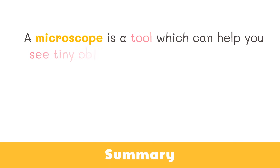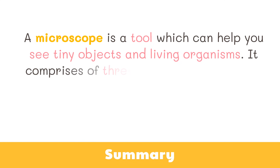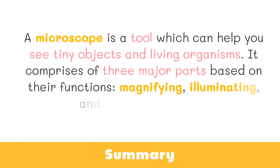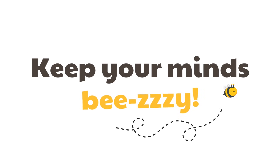So, to summarize, a microscope is a tool which can help you see tiny objects and living organisms. It comprises three major parts based on their functions: magnifying, illuminating, and mechanical parts. That's all for now. We will be discussing how to use the microscope in our next video. See you on our next video and don't forget to keep your minds busy!